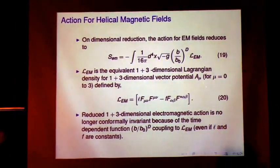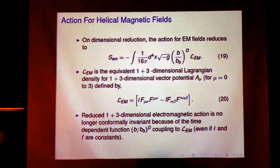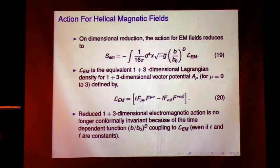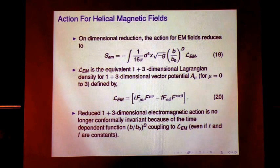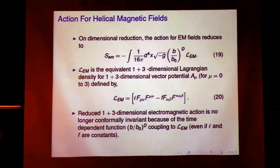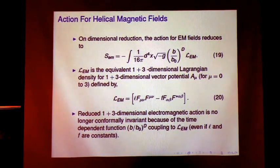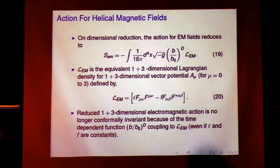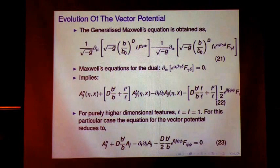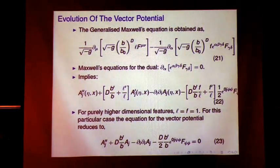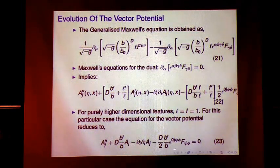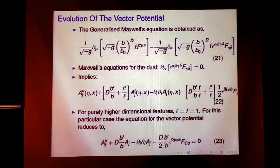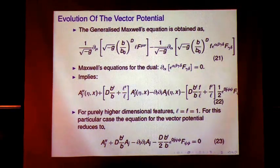And on dimension reduction again as before, we get this action. But now, this L e m includes this f mu nu term plus the f mu nu f mu nu star term. But now, this is no more a surface term because this whole thing is being multiplied by time dependent factor which is b to power d. Now here, if you reduce it to one plus three-dimensional electromagnetic action, again there is no conformal invariance even if you take L and f to be constants.